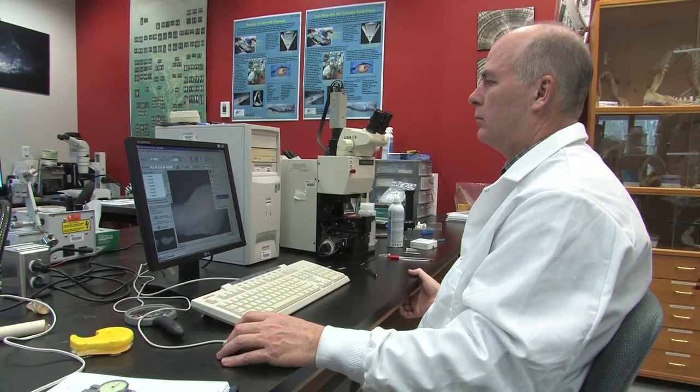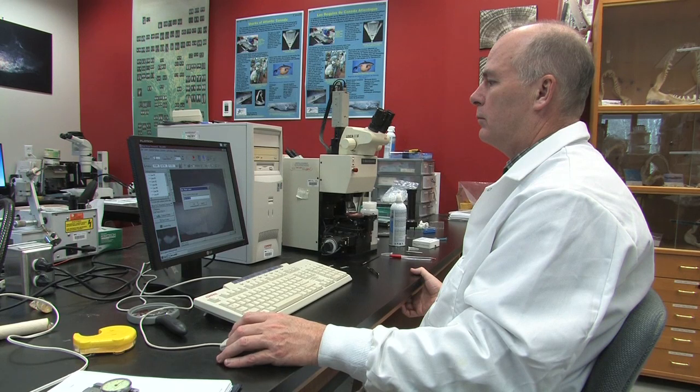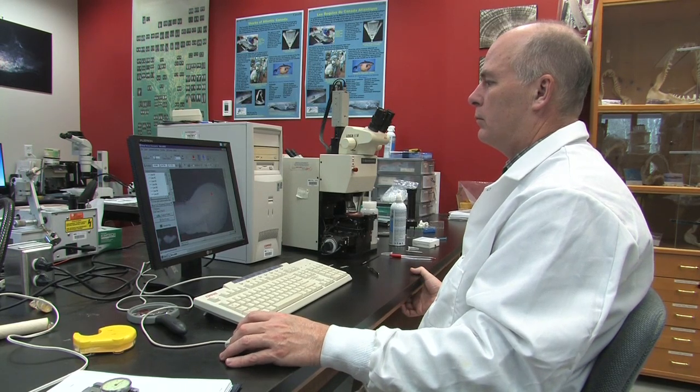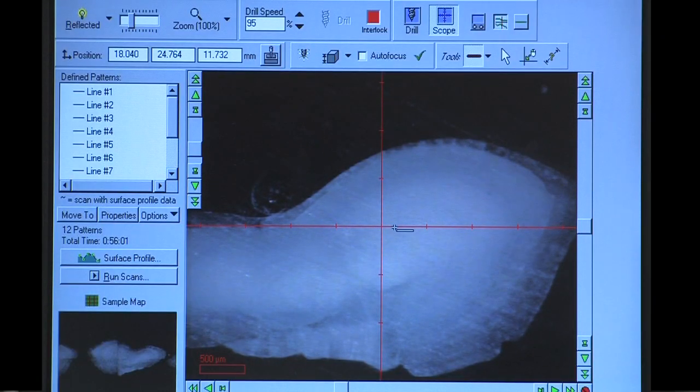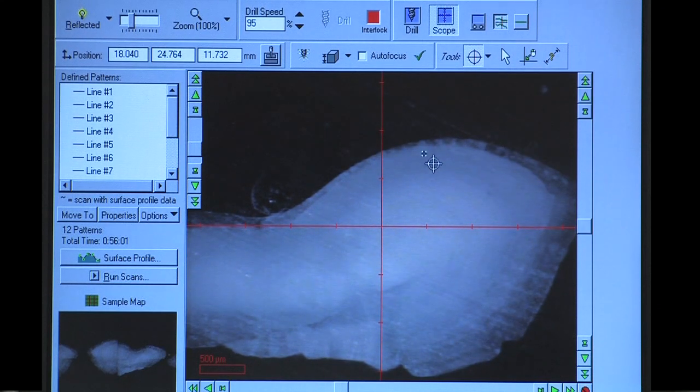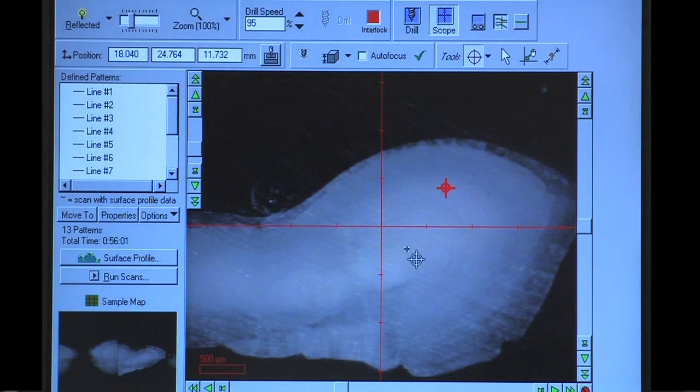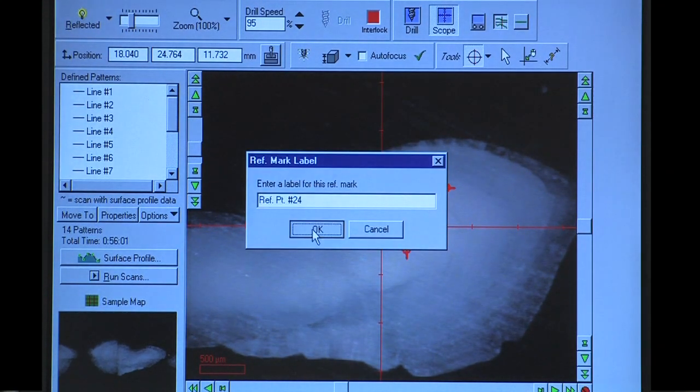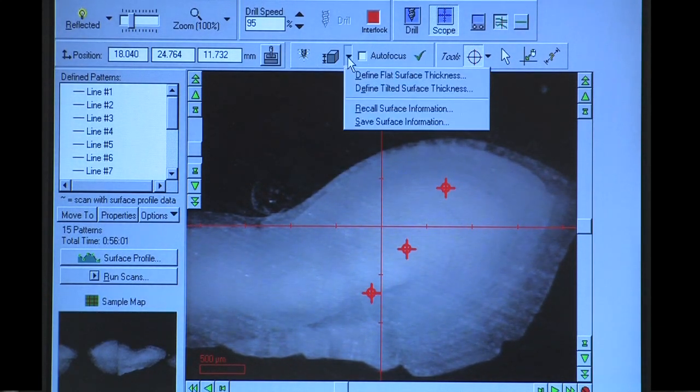For tilted surfaces, set up the micromill as you would when taking a flat surface sample as described previously. This includes calibrating the stages and taking a sample thickness as well. Once done, choose the tools button and the reference mark tool to place three reference marks on the sample. The tilted surface program requires three reference points in the sample in order to compensate for the angle. Then choose the tilted surface button and follow the screen prompts.